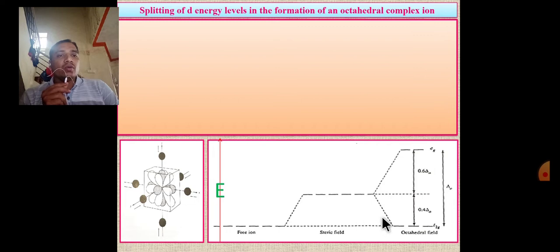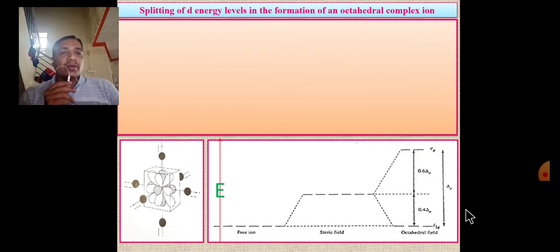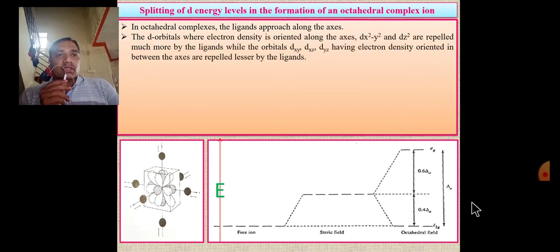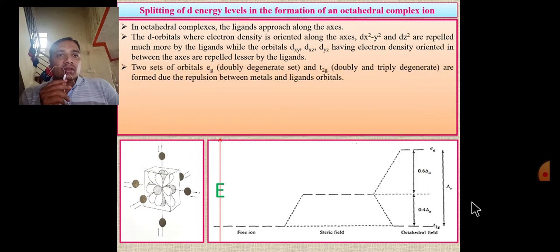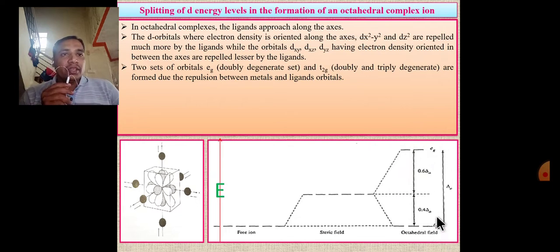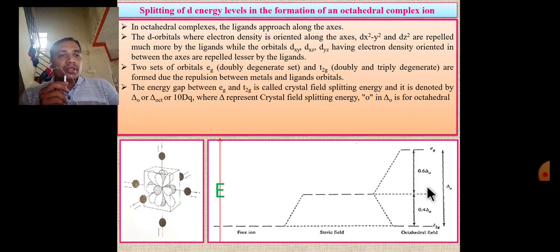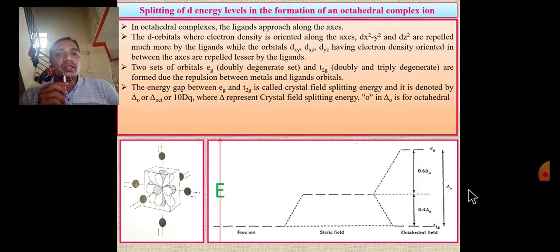After removal of degeneracy, three t2g orbitals go to a lower energy level and two eg orbitals go to a higher energy level. The eg set is doubly degenerate and the t2g set is triply degenerate. The total splitting parameter is 10Dq. From the barycenter to the lower energy level is 0.4Δ, and from the barycenter to the higher energy level is 0.6Δ. This splitting parameter ΔO is called the octahedral splitting parameter.